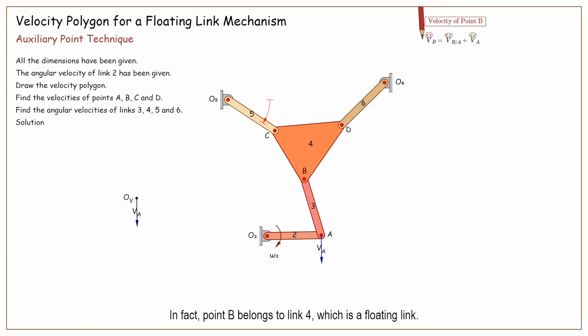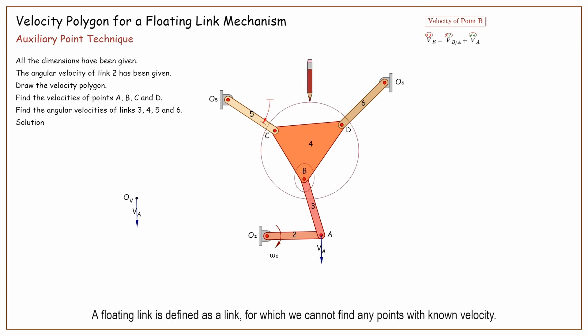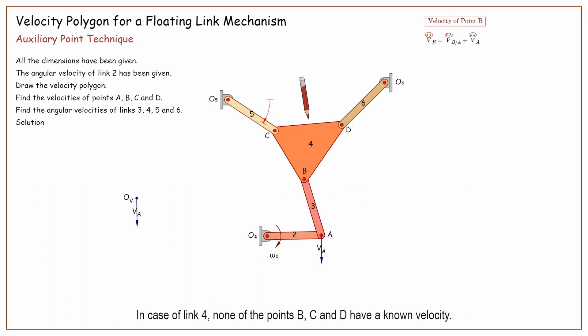In fact, point B belongs to link 4, which is a floating link. A floating link is defined as a link for which we cannot find any points with known velocity. In case of link 4, none of the points B, C, and D have a known velocity.